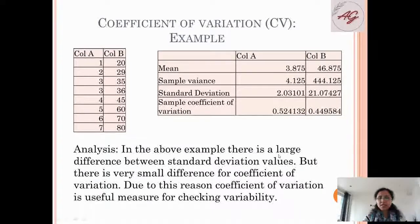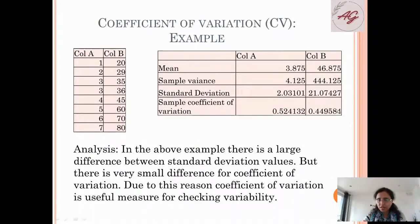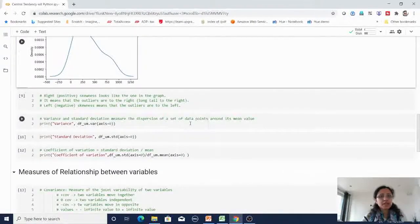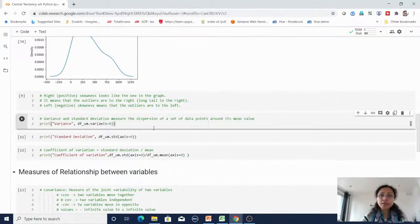In this above example, there is a large difference between standard deviation values, but there is a very small difference for the coefficient of variation, which we can already observe. Due to this reason, the coefficient of variation is a useful measure for checking variability. Now we'll move on to the Python code section. I have the same data set created earlier — df_um — where you can find all the annual income values.